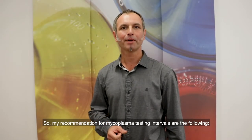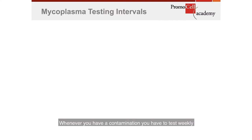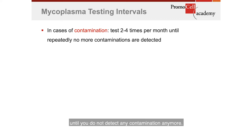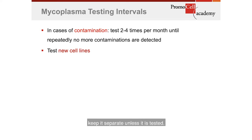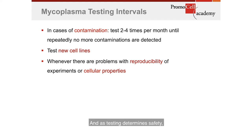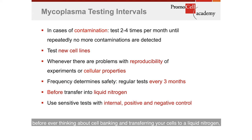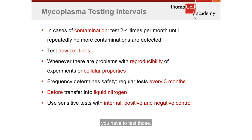My recommendations for mycoplasma testing intervals are the following. Whenever you have a contamination, you have to test weekly until you do not detect any contamination anymore. If you ever have a new cell line arriving at your lab, keep it separate unless it is tested. Whenever you have problems with reproducibility of results or with cellular morphology, think about testing. And as testing determines safety, a three-month interval for routine testing is recommended. Last but not least, before ever thinking about cell banking and transferring your cells to liquid nitrogen, you have to test those.